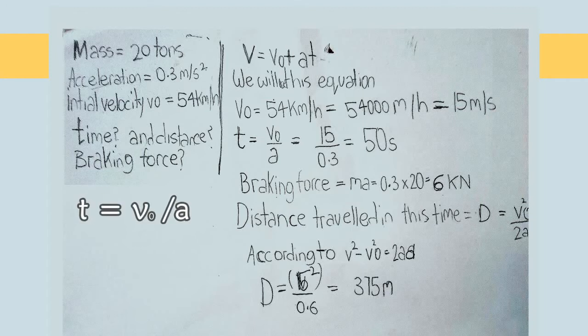So we can rearrange the equation. Time equals V0 divided by A equals 15 divided by 0.3 equals 50 seconds.